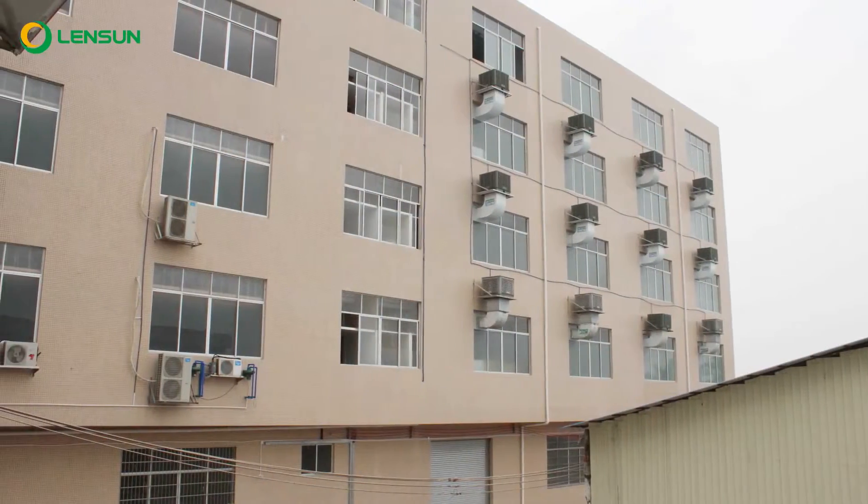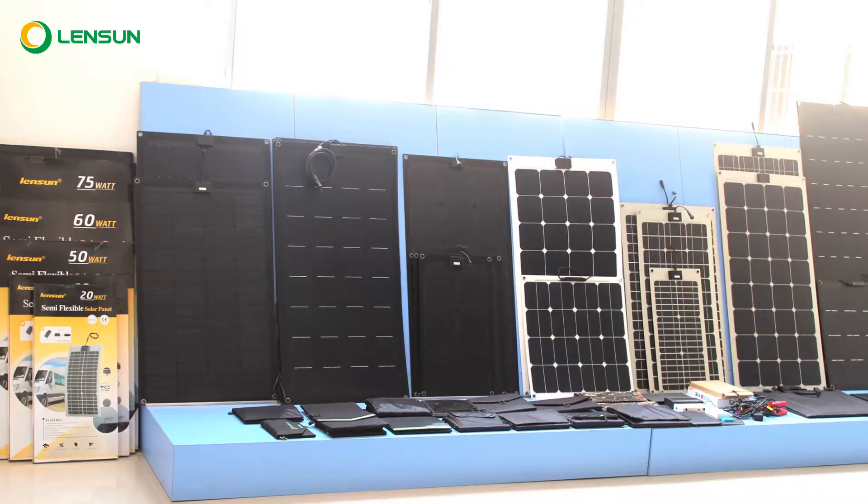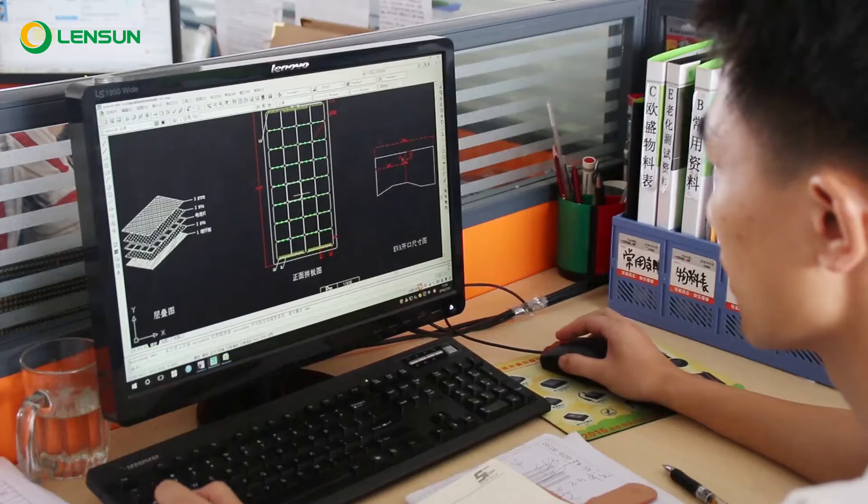Lensun Solar Company was established in 2008. The factory is in Guangzhou. We specialize in outdoor solar chargers, semi-flexible solar panels, and folding solar panels.